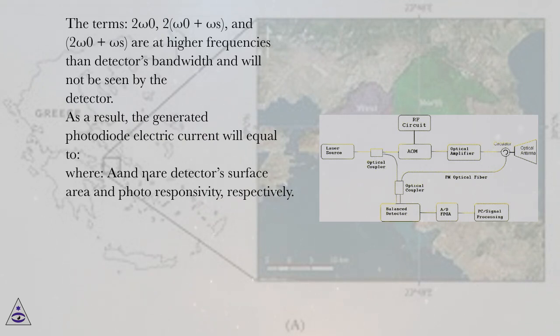As a result, the generated photodiode electric current will equal: Where A and η are detector's surface area and photoresponsivity, respectively.